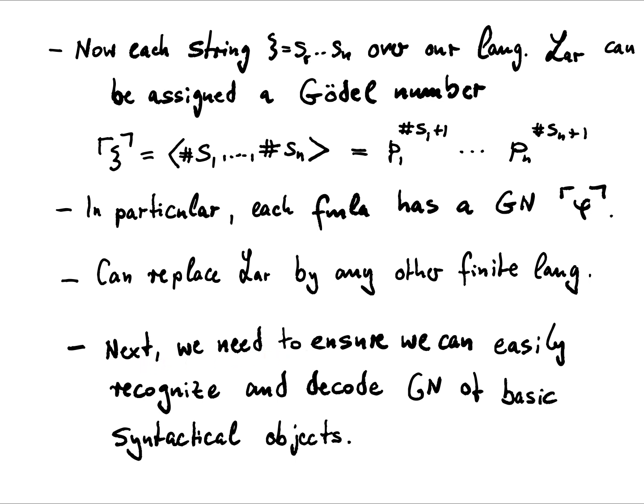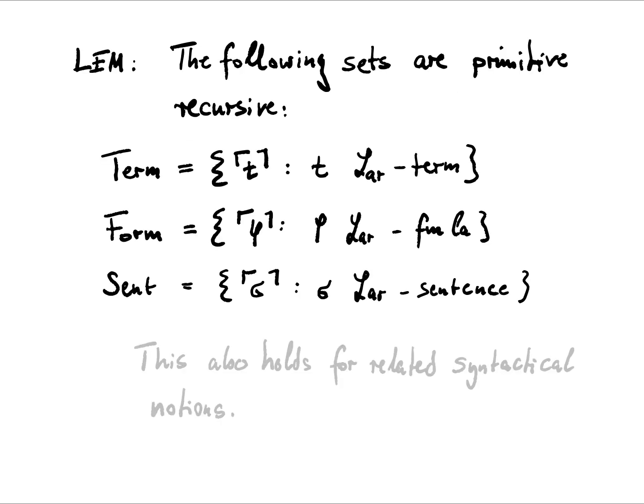Next we need to ensure we can easily recognize and decode the Gödel numbers of basic syntactical objects. This is similar to the idea of decoding Turing machines or Gödel numbers of Turing machines. So the first thing we have to check is that the basic sets or concepts of formal logic give us sets of codes that are very easy to recognize. In particular, we want them to be primitive recursive: the set of all Gödel numbers for terms, set of all Gödel numbers for formulas, and set of all Gödel numbers for sentences.